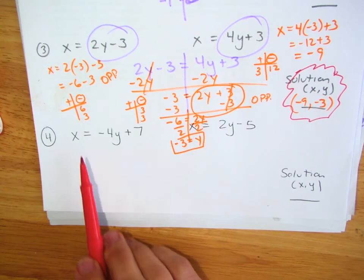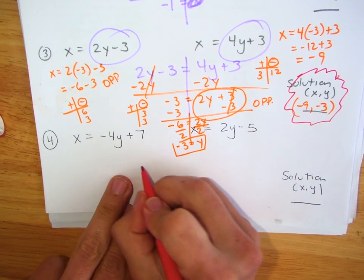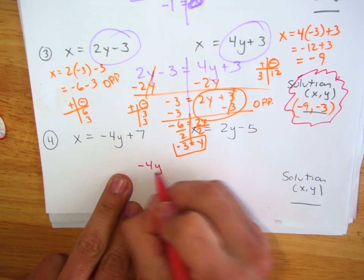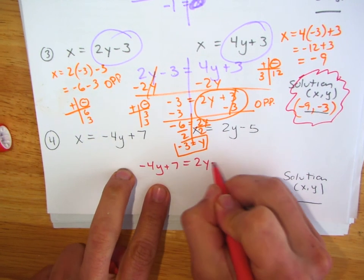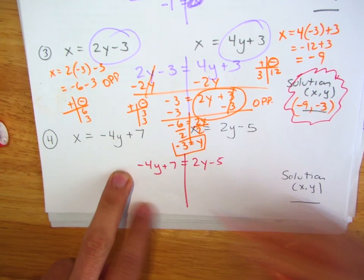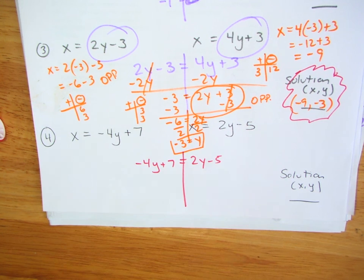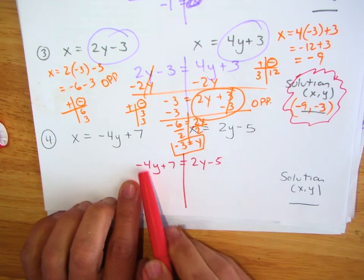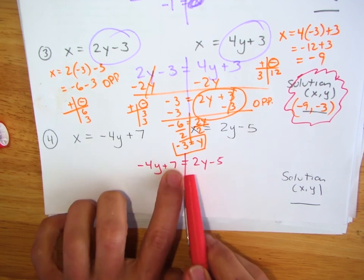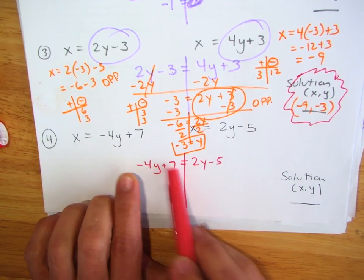And the last one. Again, they're both equal to x, so I'm going to set the expressions together. Now we need to solve for y. Zero pairs, because I cannot add negative 4y plus 7 since 7 doesn't have a y. That's why it's called combining like terms — they're not like each other. That has a y, that doesn't.